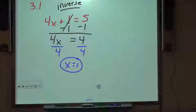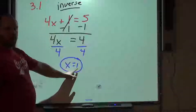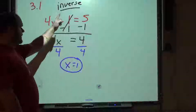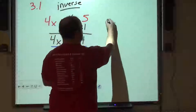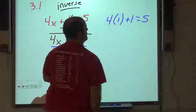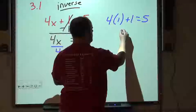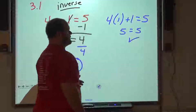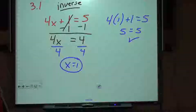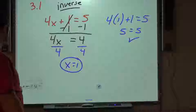On the sheet of paper Mr. Vogt is giving you, there is a section to check your answer. Take 1 and plug it back in for x into the original equation: 4 times 1 plus 1 equals 5. Does that work? 4 plus 1 is 5, 5 equals 5 — yes, it checks out. Make sure you go back, check your problem and your work, and confirm the equation balances.